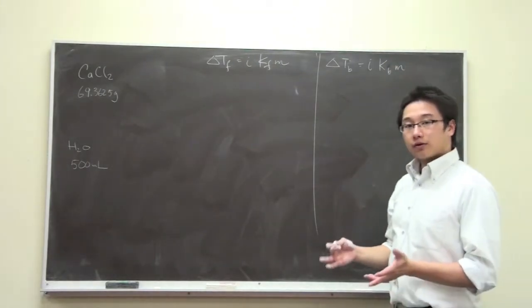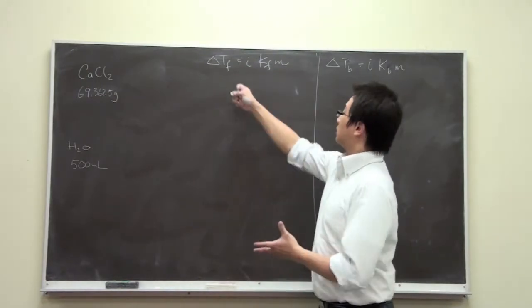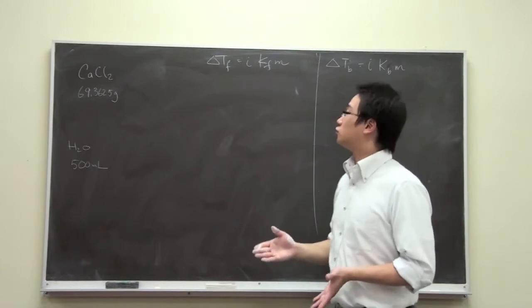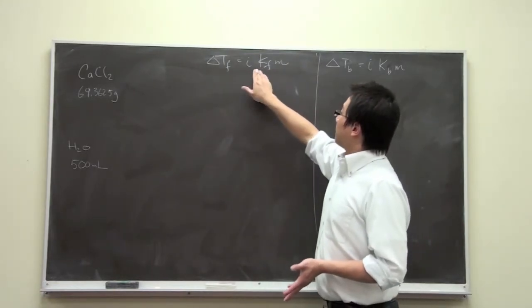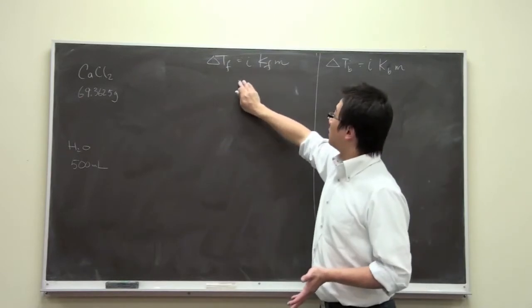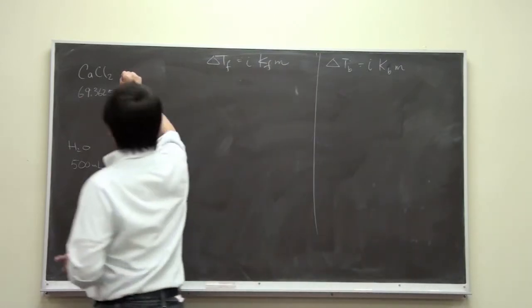Now, we would like to find out the new freezing point and the boiling point. So we would have to find out the change. We have most of the values. We have the i, in this case, the i would be, so let's take a look.